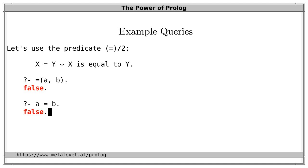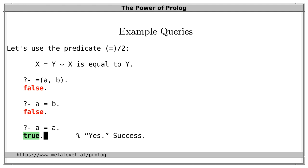Let's now try to find a case that holds. We can easily find such a case — for example, when we ask: is a equal to a? Then the system answers true, meaning yes, that's the case. This is also called success; procedurally speaking, the query succeeds.